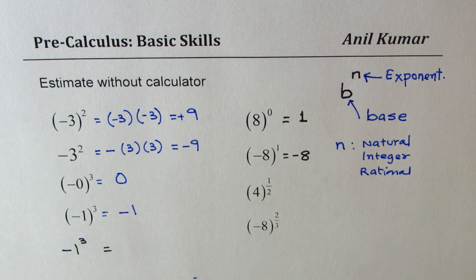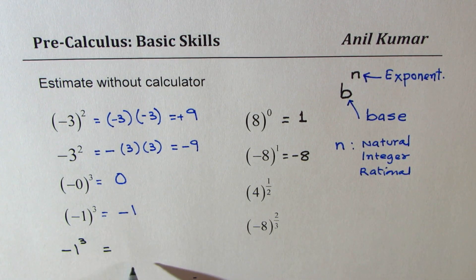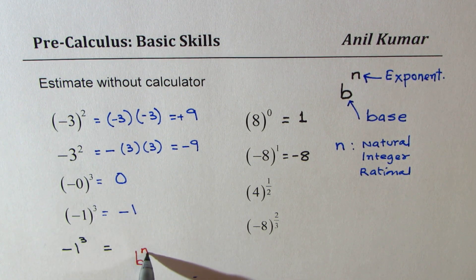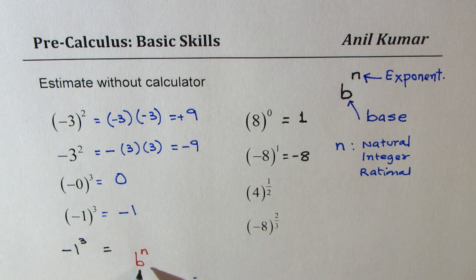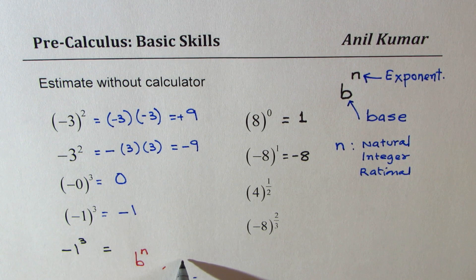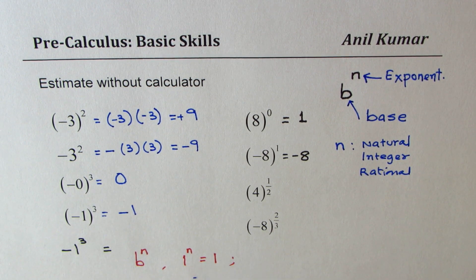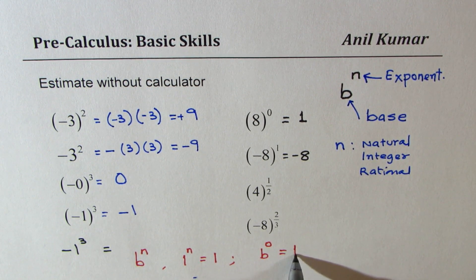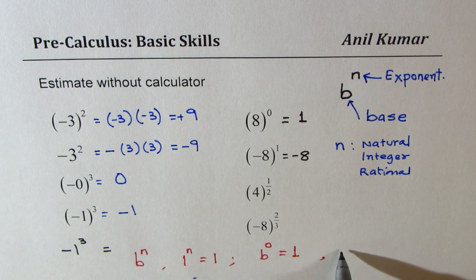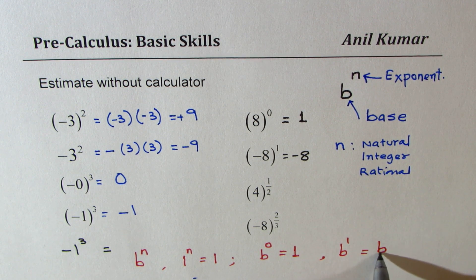Let me generalize this for you. If I have b to the power of n where b is 1, then 1 to the power of n will be equal to 1 only. If I have b to the power of 0, it will be equal to 1. And if I have b to the power of 1, it will always be equal to b. So these are important things to remember.